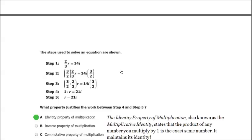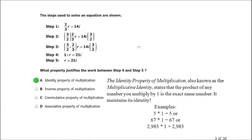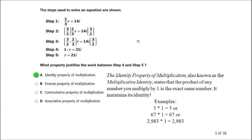Question 3: the steps used to solve an equation are shown. What property justifies the work between step 4 and step 5? Step 4 has 1 times r equals 21i; step 5 has r equals 21i. That's the identity property of multiplication — also known as the multiplicative identity — which states that any number multiplied by 1 maintains its identity. For example, 5 times 1 is still 5, 67 times 1 is still 67, 2,983 times 1 is still 2,983. That one was pretty easy.